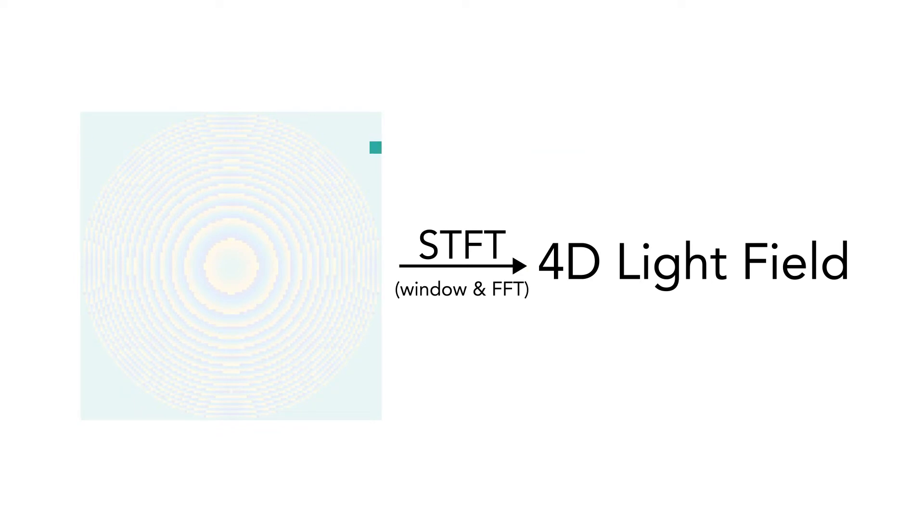Let's switch to 2D. Here, we have the lens function for a point at some distance. Applying the STFT, we would obtain a 4D light field, which can be used to create a stereogram.